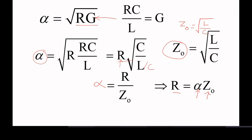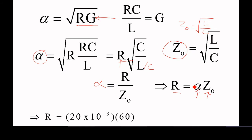These are the different types of problems. In an exam, simple direct substitution problems may be asked, or this type of problem may also be asked. You should be familiar with all types of problems. Alpha is given as 20 milli — milli means 10 to the power of minus 3 — and characteristic impedance is given as 60 ohms. Then we will get the value of R as 1.2 ohms per meter.